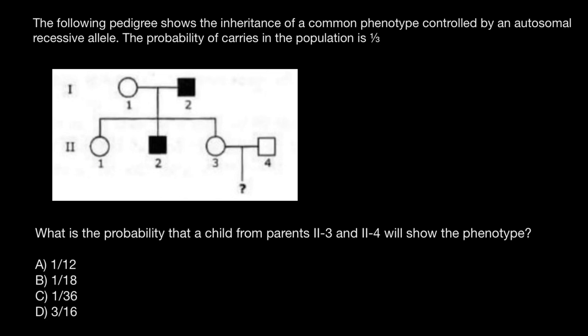The probability of carriers in the population is one third. What is the probability that a child from parents 2-3 and 2-4 will show the phenotype? We have to find the probability of this child being homozygous recessive and showing the phenotype like the affected people in the pedigree.